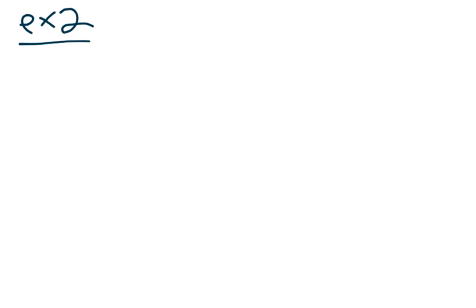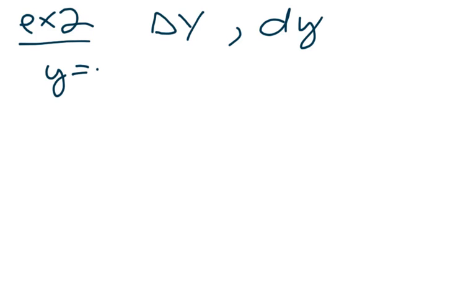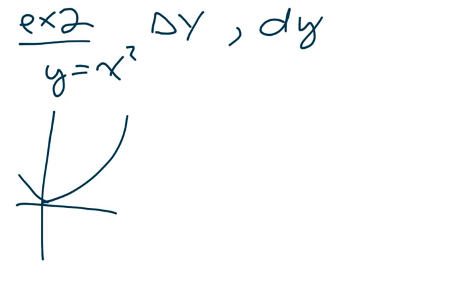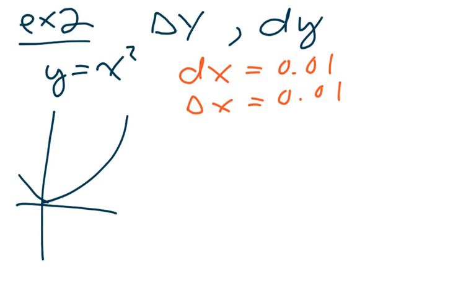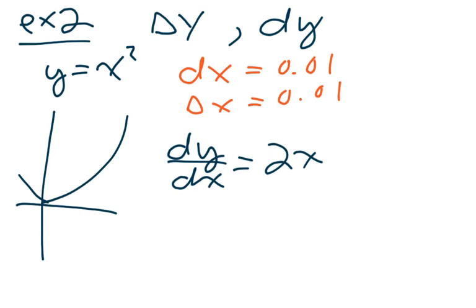Let's look at a concrete example — example 2 — comparing delta y and dy. We have the curve y equals x squared, a regular parabola. We're asked to compare delta y and dy when dx equals 0.01, and delta x is also 0.01. To find dy, we apply our definition of differential. Taking the derivative first: dy/dx is 2x, which means dy equals 2x dx.